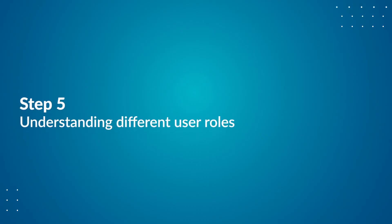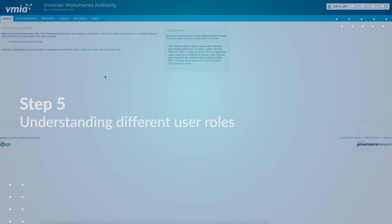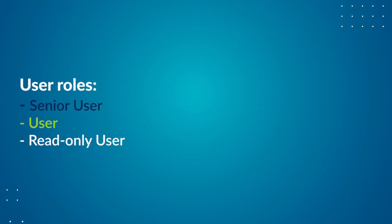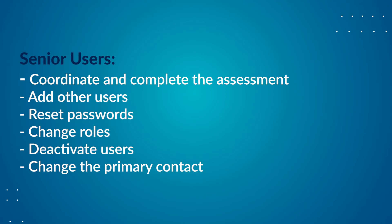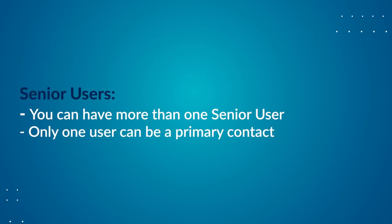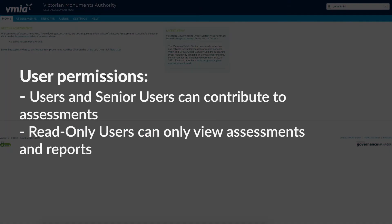Step 5: Different User Roles. There are three types of user roles: Senior User, User, and Read-Only User. Senior users usually coordinate and complete the assessment. They can also add other users, reset passwords, change roles, deactivate users, and change the primary contact. You can have more than one senior user, however only one user can be the primary contact with VMIA. A user can contribute to an assessment, whereas a read-only user can view the assessment and reporting only.